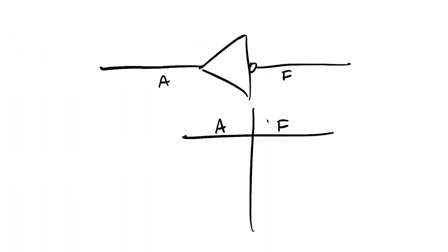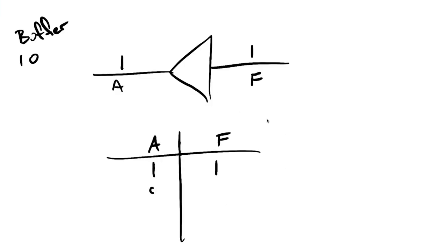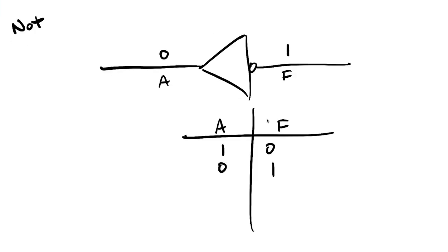Our next one is a NOT gate. You can tell it looks like a buffer but it has this little circle on it. What that means is whatever happens on the input, the opposite happens on the output. If I have an input of one then I'm going to have an output of zero, and if I have an input of zero I'm going to have an output of one. My truth table: one gives me zero, zero gives me one. Anytime you see this little dot at the end of a gate, it means it's going to be the opposite.